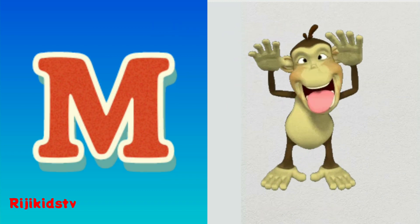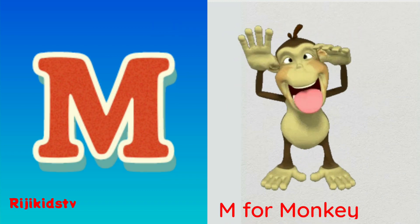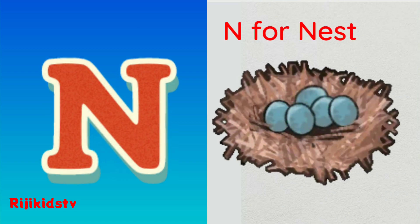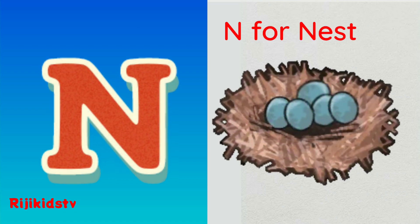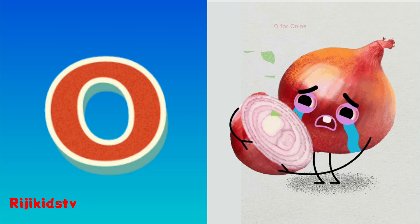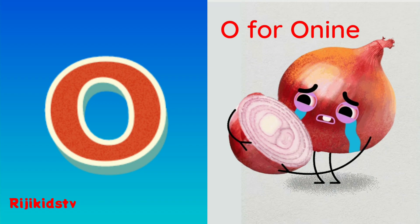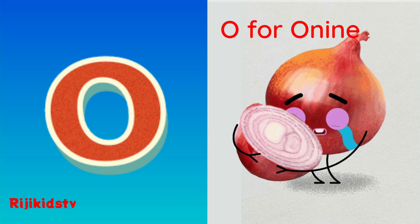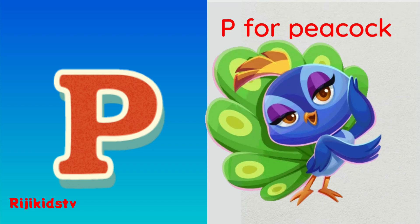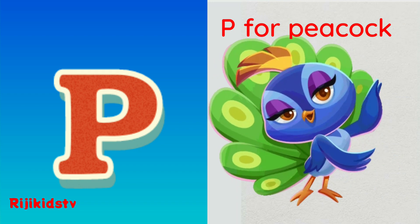M. M for Monkey. N. N for Nest. O. O for Onion. P. P for Peacock.